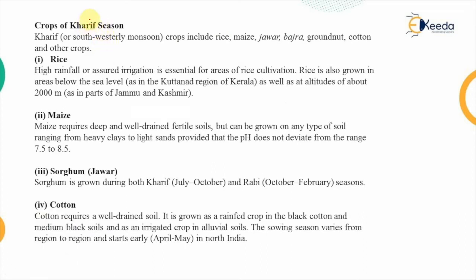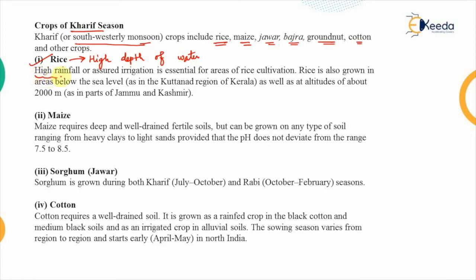The major Kharif crops — which depend on the monsoon — include rice, maize, jowar, bajra, groundnut, and cotton. For rice, a high depth of water is required for sufficient nourishment, so high rainfall or assured irrigation is essential. Rice is also grown in areas below sea level that are always flooded, such as the region in Kerala.